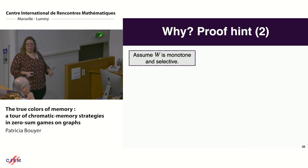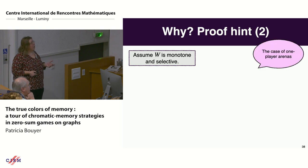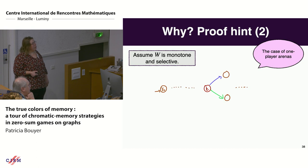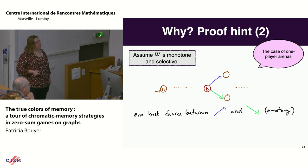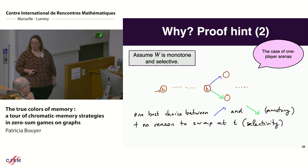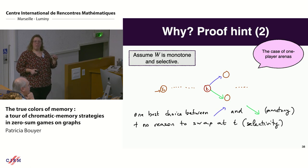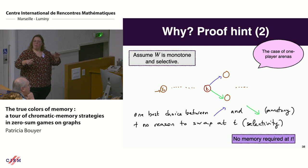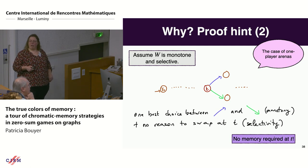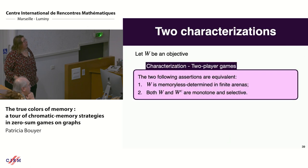For the converse: assume W is monotone and selective. In a one-player game at state T with several options, by monotonicity there is a best choice between blue and green. By selectivity, there is no reason to swap when visiting T multiple times—so no memory is required at that state. This is the key idea, though the full proof is more complex. This is a nice characterization of memoryless determinacy in finite games, requiring the hypothesis of finite arenas for induction.